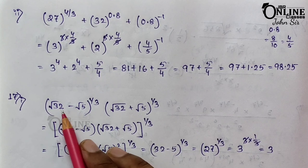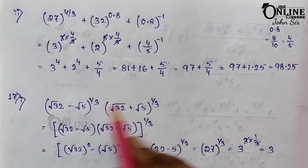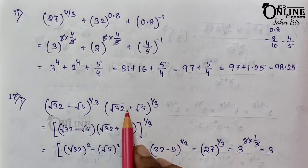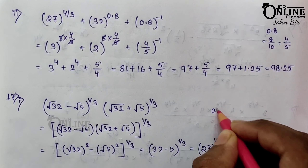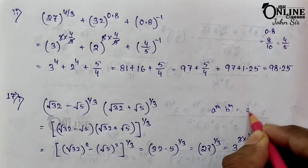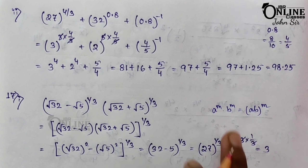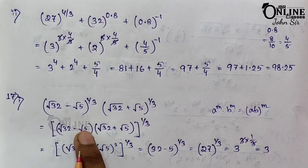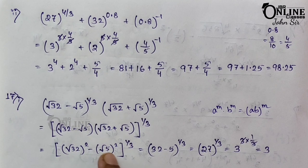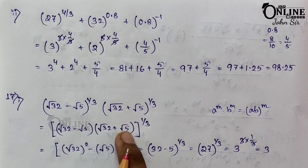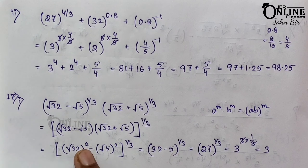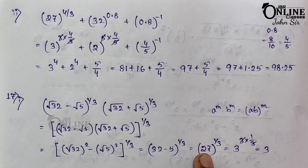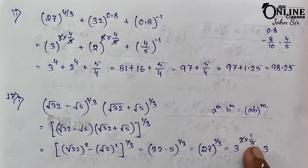Sum 17.1: (∛(√32 − √5)) × (∛(√32 + √5)). Since the powers are the same, apply a^m × b^m = (ab)^m to get ((√32 − √5)(√32 + √5))^(1/3). Using a² − b²: 32 − 5 = 27. Then 27^(1/3): 27 = 3^3 so the answer is 3.